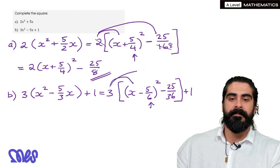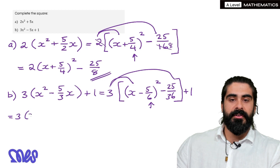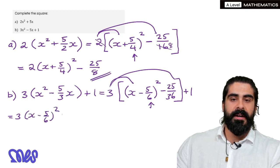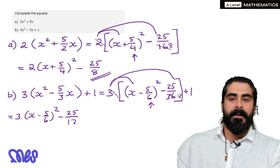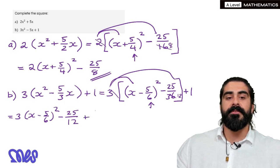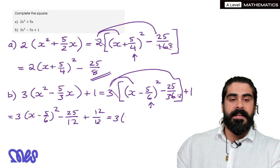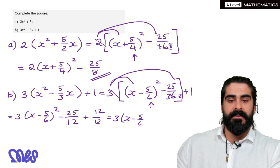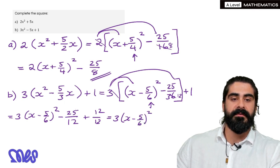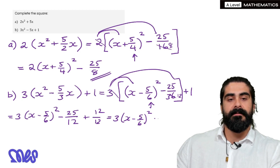Multiplying the 3, so we have 3 lots of x minus 5 over 6 squared minus, then the 36 cancels the 3 to make 12, so we have minus 25 over 12, plus 1. Now I'm anticipating that we're going to have to write the same denominator, so 1 is the same as 1 over 1, but then we want the denominator to be 12, so we times top and bottom by 12. So we have this, so we have 3x minus 5 over 6 squared, then we have minus 25 plus 12, which makes minus 13 over 12.